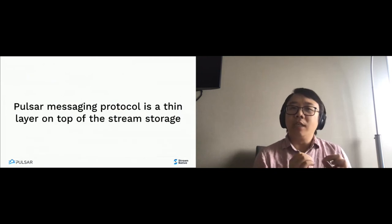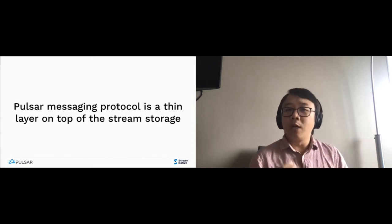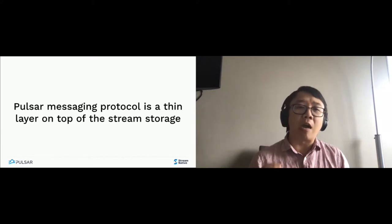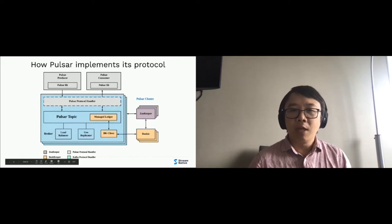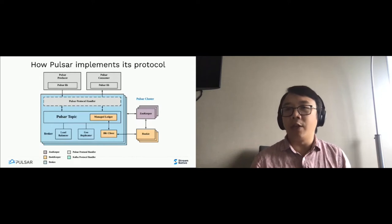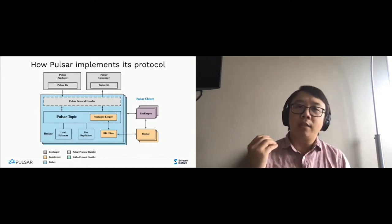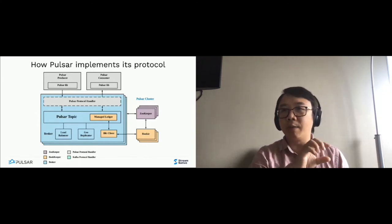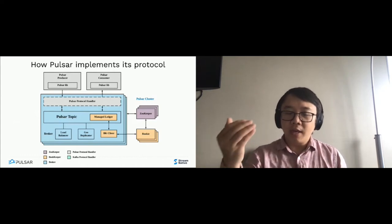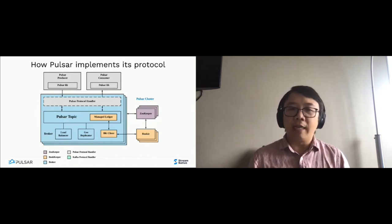Going back to when Pulsar was originally built — because of the careful design of building Pulsar on top of a stream storage model, the Pulsar messaging protocol is a very thin layer just built on top of the stream storage. The architecture has three components: ZooKeeper for metadata storage and service discovery, BookKeeper for storage, and on the broker, an event stream storage concept where each topic is backed by a managed ledger. The managed ledger is essentially an append-only distributed log or stream, and uses the storage library to talk to the bookies.